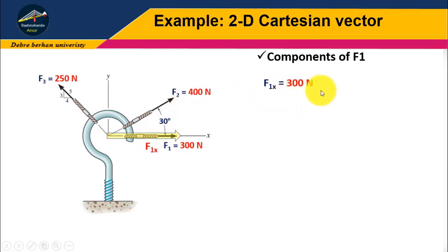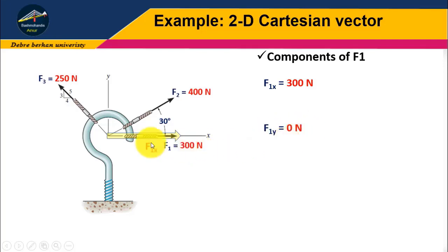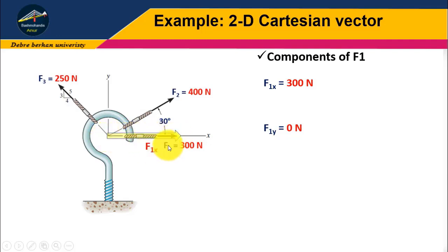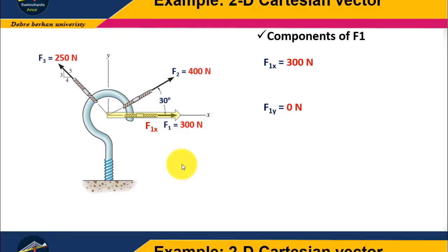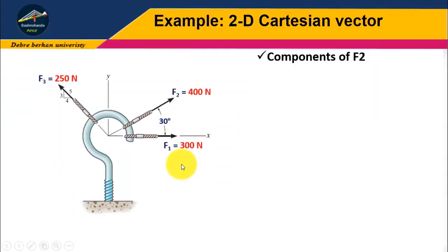Next, F1Y. Since F1 is a perfectly horizontal force, F1Y equals 0. Now, let us calculate the force components for F2.